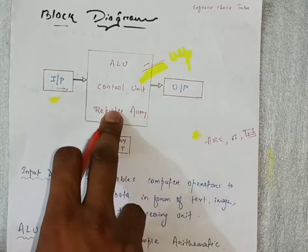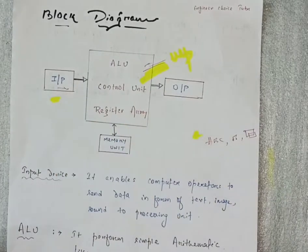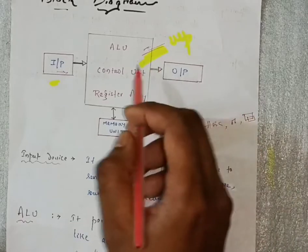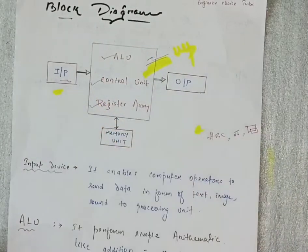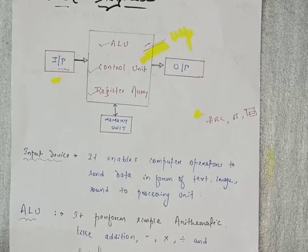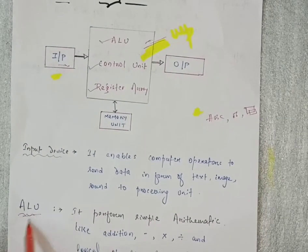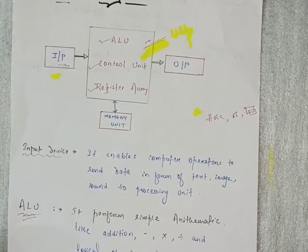It will pass this input to the microprocessor. In the center, it comprises of different parts: ALU, control unit, and register array. Microprocessor consists of three parts. The first one is ALU - it performs simple arithmetic and logical operations.